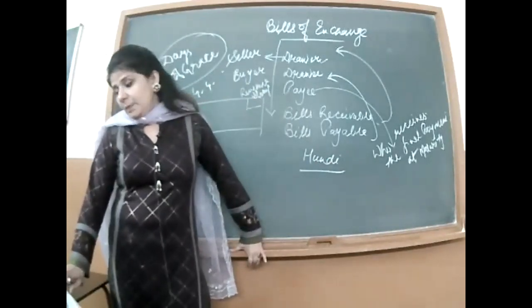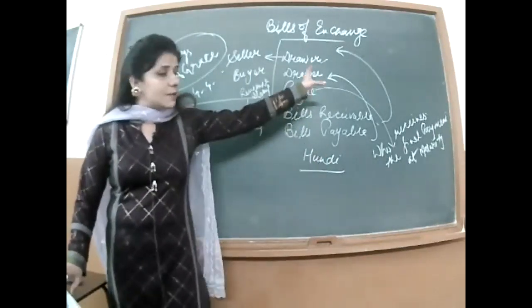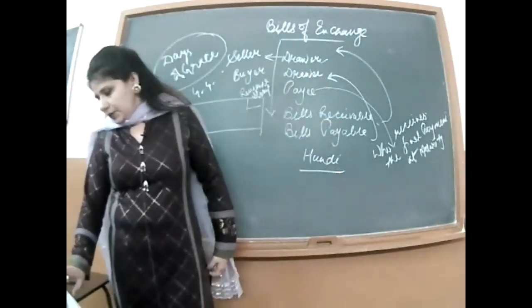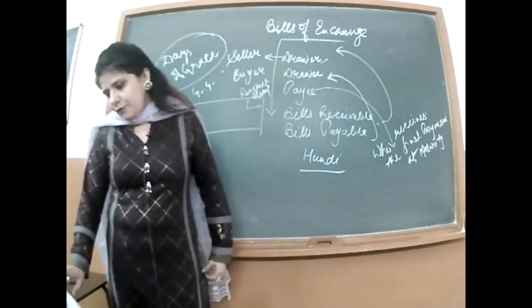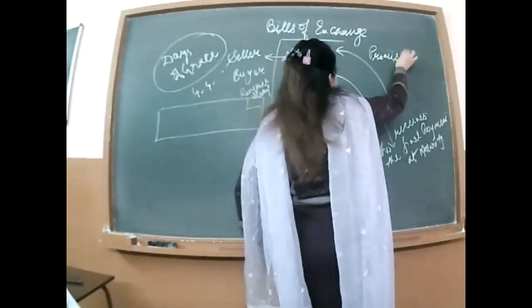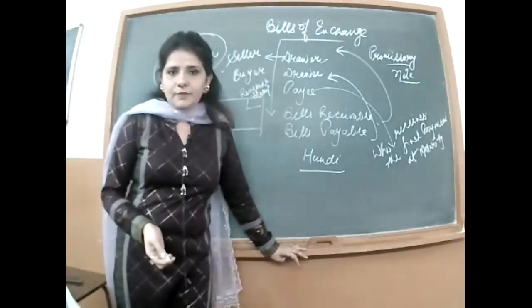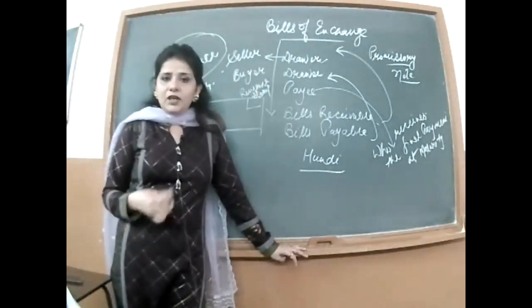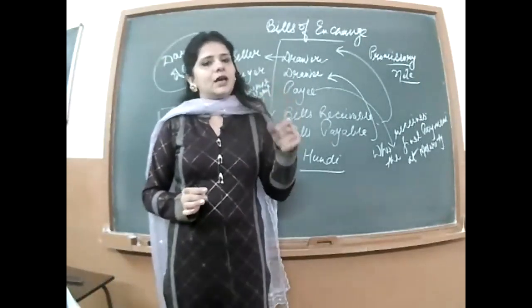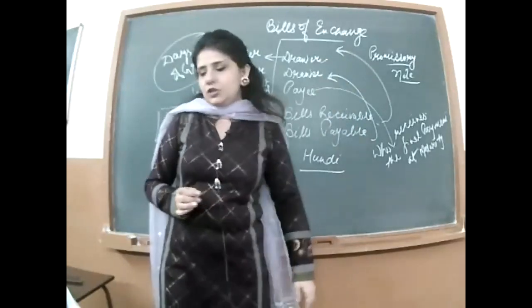The matter is resolved by a return undertaking or agreement from the buyer to pay the amount after a specified time period. Buyer baad mein payment kar dega, lekin voh likha ke ek return promise de. This formal document is known as Bills of Exchange, or in this chapter we will also call it a promissory note, whereby the buyer promises to pay to the seller after a specified time period a specified amount.